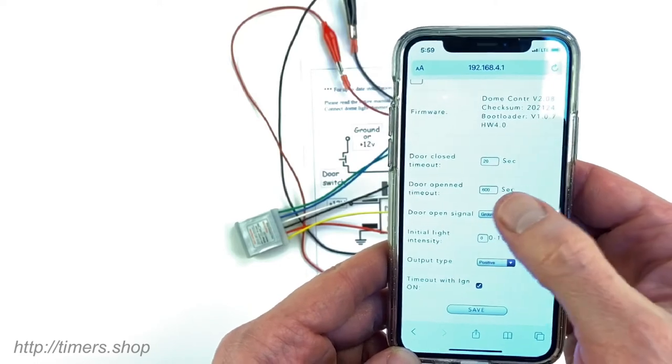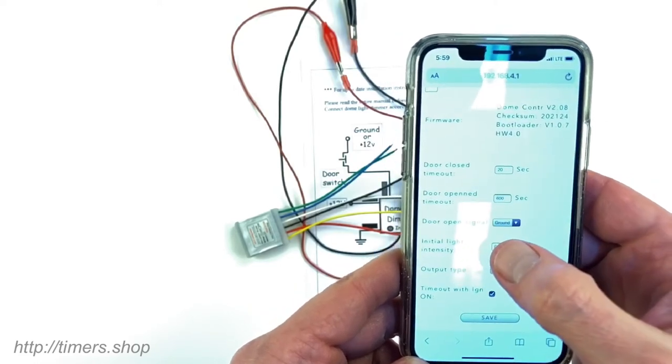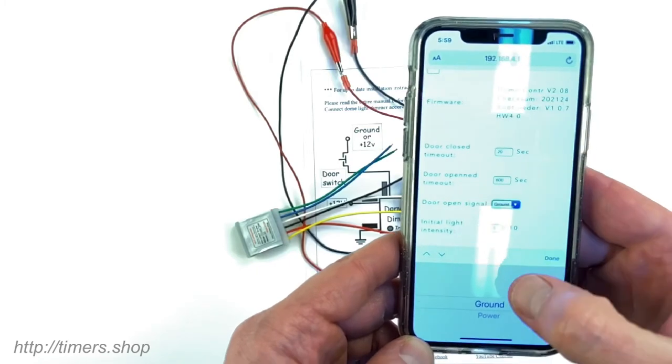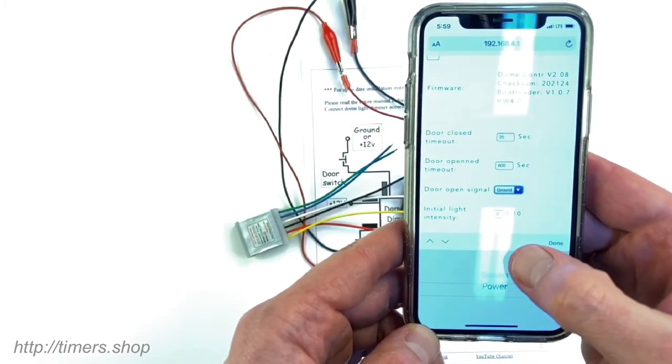Door open timeout is set to 600 seconds. The door open signal is ground, and you can change it to power.